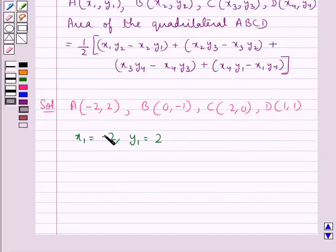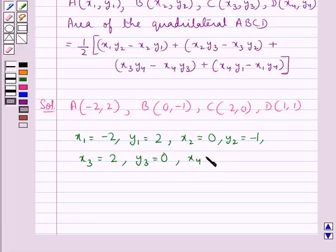That is, x₁ is the x-coordinate of point A, y₁ is the y-coordinate of point A. x₂ is 0, the x-coordinate of B. y₂ is -1, the y-coordinate of point B. Then x₃ is 2, x-coordinate of point C. y₃ is 0, the y-coordinate of point C. Then x₄ is 1, the x-coordinate of point D, and y₄ is 1, y-coordinate of point D.